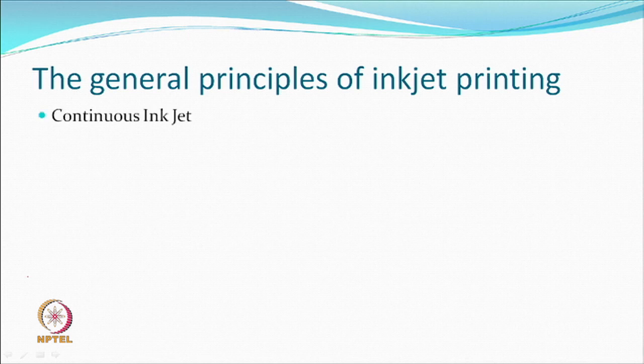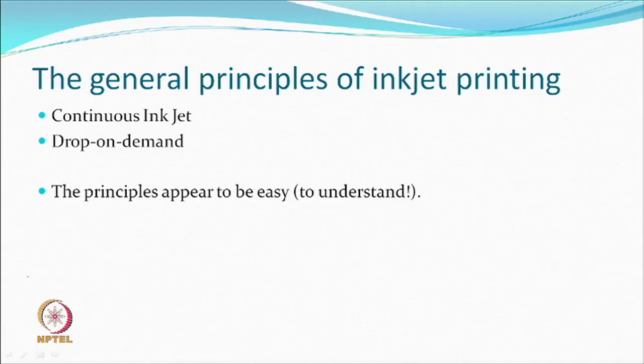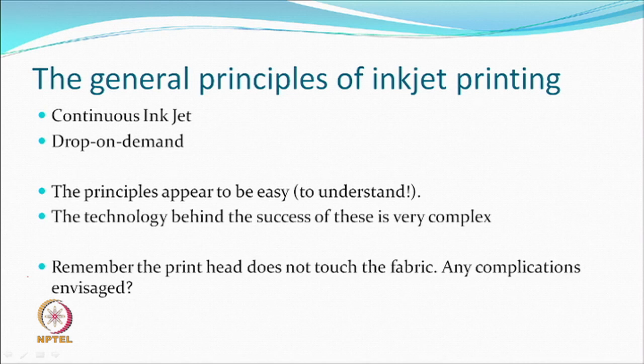The general principles of inkjet printing are: one is called continuous inkjet, designed for textiles where the jet is continuously being generated. You do something so that wherever the drop has to fall it falls, and wherever it is not supposed to fall it does not. The other is called drop on demand — whenever a drop is needed it is generated, otherwise it is not. These are two principles; the electronics and software governing them may be the same. The principles appear easy to understand, but getting them done is obviously more complex. The cost and sophistication are still part of this technology. Remember again that the print head does not touch the fabric.